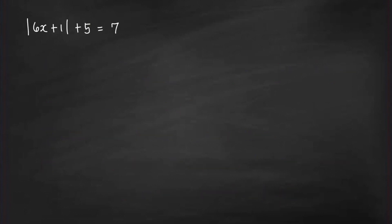Let us now solve some equations. Consider this first equation: |6x + 1| + 5 = 7. The first step is to subtract 5 from both sides of the equation, giving us |6x + 1| = 2. We need to isolate the absolute value expression first.